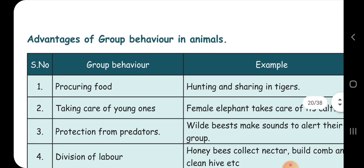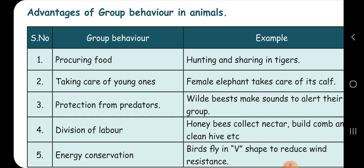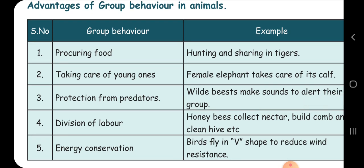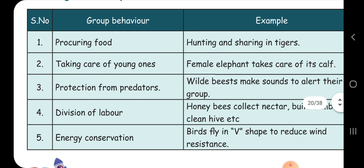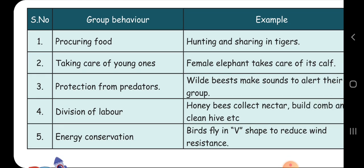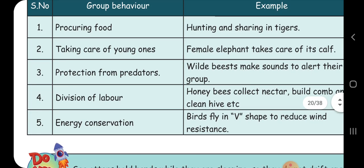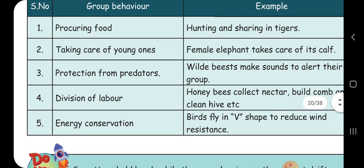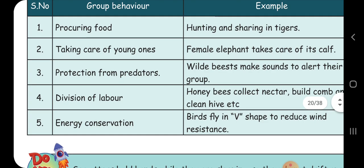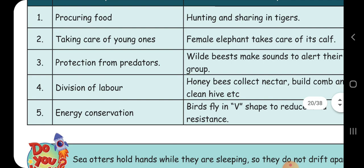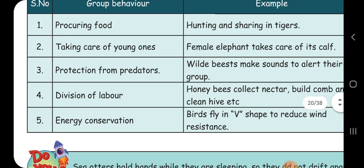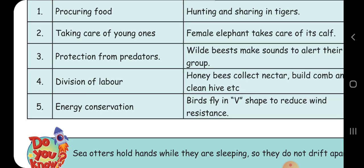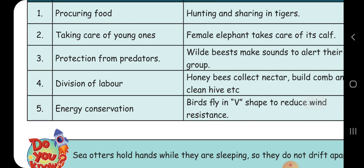What are the advantages of living in groups? First, procuring food — animals can hunt together and share food. Second, they can take care of their young ones, like female elephants caring for their calves. Third, protection from predators. Fourth, division of labor — work is divided among the group, like how honeybees share tasks of collecting nectar and cleaning the hive. Fifth, energy conservation — birds fly in a V-shape to reduce wind resistance.